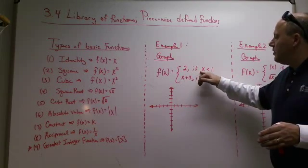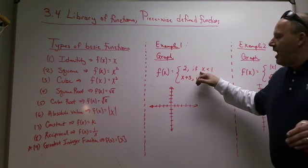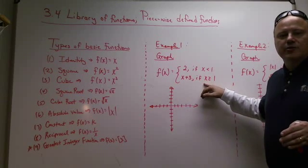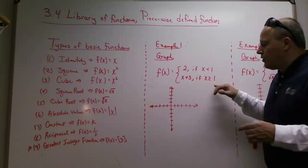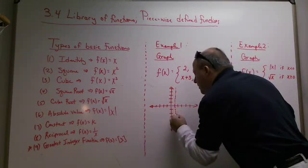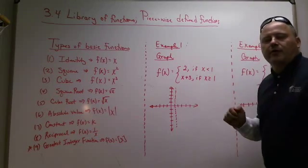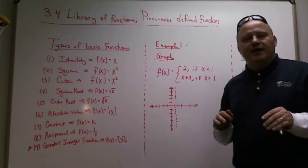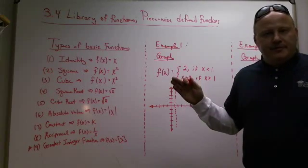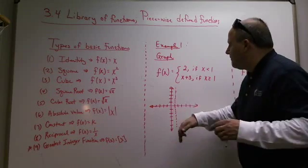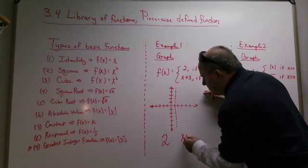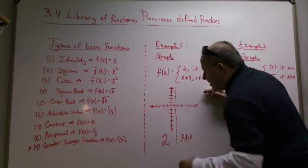So, f(x) equals two, as long as your x coordinates are less than one. And the value of the function is x plus three, if x's are greater than or equal to one. So, at one, it appears that something changes. What I do is, I put a little dotted vertical line. It's not an asymptote. But what it is, is a separator. On the left side of the separator, the function is defined to be two. And on the right side of the separator, it is defined to be x plus three. So, I call that the separator line.